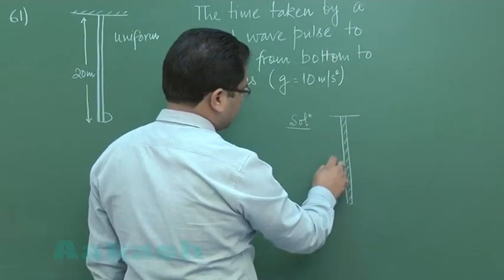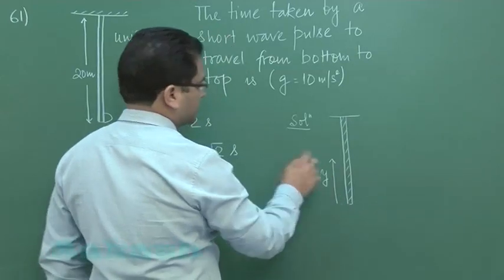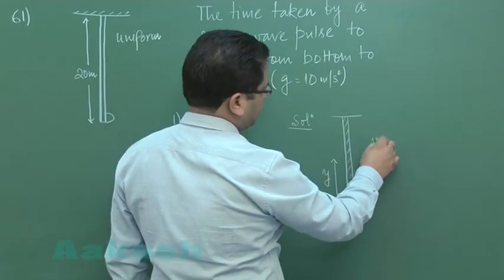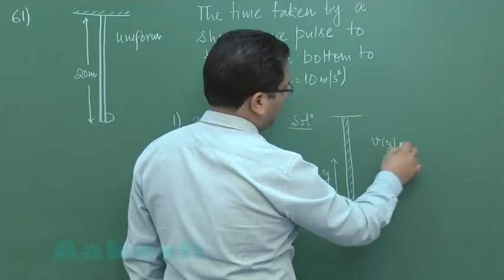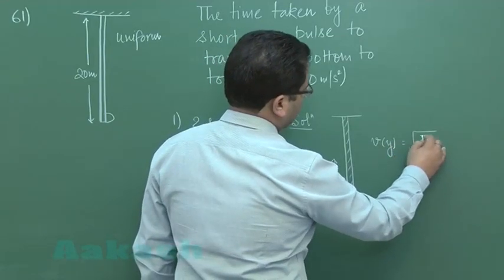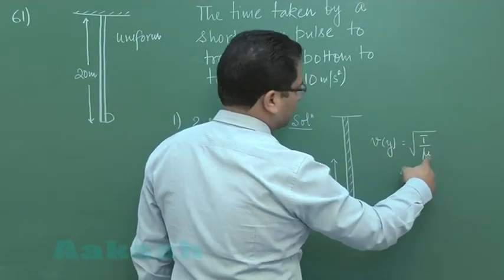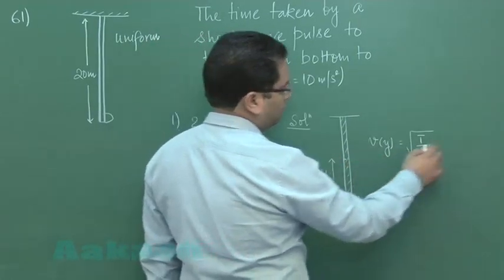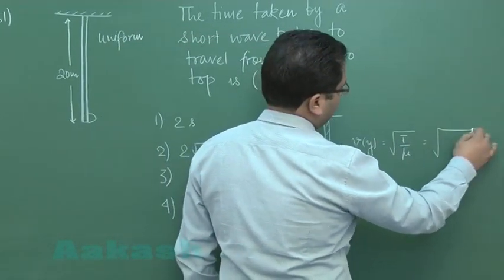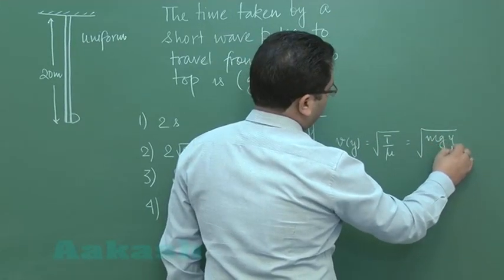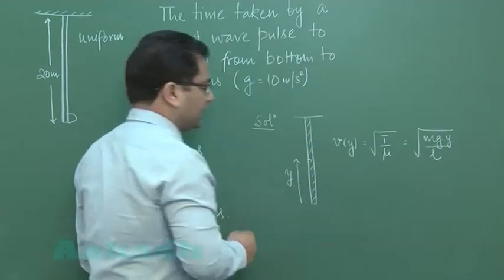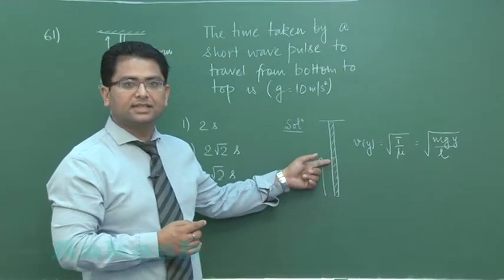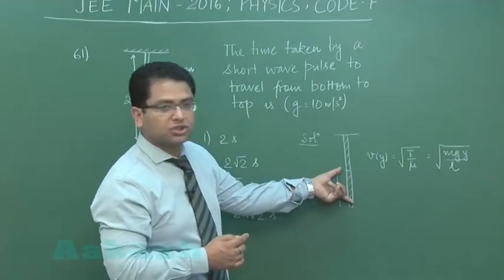Let us go at a distance y. Let me try to find the velocity which of course would be a function of y. We know the formula is root T by mu, where mu is the mass per unit length and T is the tension at this particular point. So that comes out to be mgy by L. The tension at this particular point is due to the weight of this portion of the string.